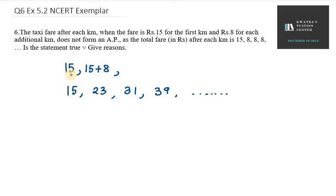Not 15, 8, 8, 8 - that won't form an AP. The correct AP will be 15, 23, 31, 39... You can check that the difference for all consecutive terms is 8. Therefore, this forms an AP.